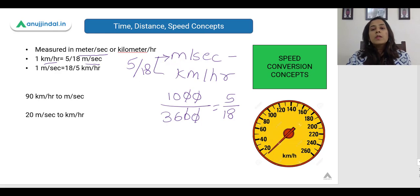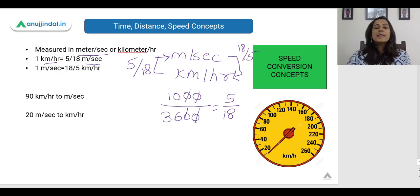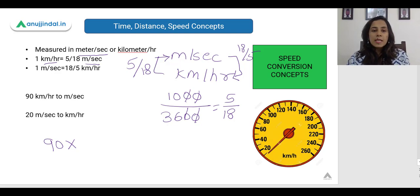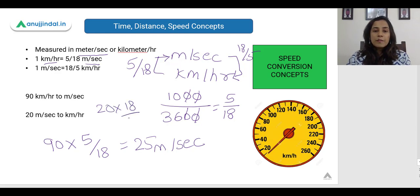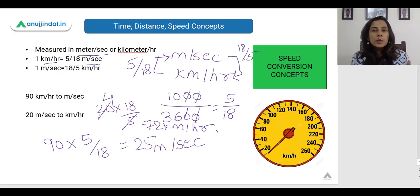Similarly, if we want to convert meters per second into kilometers per hour, we multiply by the reciprocal of 5/18, which is 18/5. So to convert 20 meters per second to kilometers per hour, we multiply by 18/5, which comes out as 72 kilometers per hour.